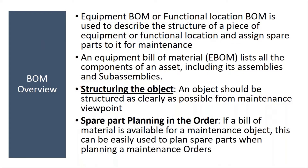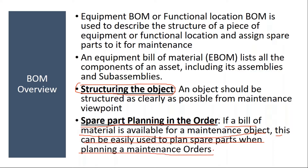If you have a BOM, you get the structure — what spare parts are present, their quantities, and everything. The next reason is spare part planning in the order. If a bill of material is available for a maintenance object, it can be easily used to plan spare parts when planning maintenance orders. Once you have the BOM, during order processing, you can use those BOMs for spare part planning, which becomes very easy for users.